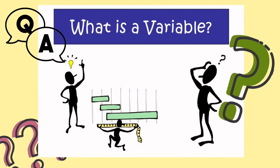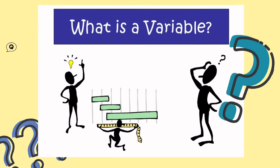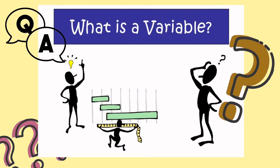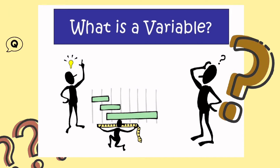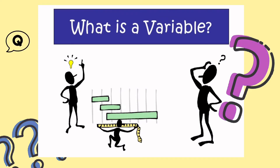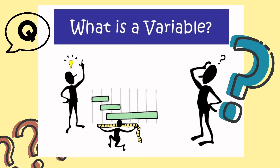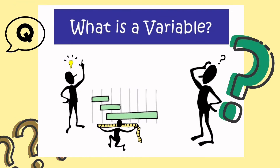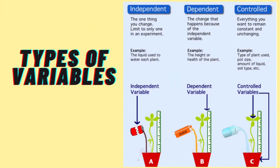Now, what is a variable? Variables are an important part of an experiment. A variable is anything that can change or be changed. In other words, it is any factor that can be manipulated, controlled for, or measured in an experiment. There are three types of variables: independent, dependent, and controlled.